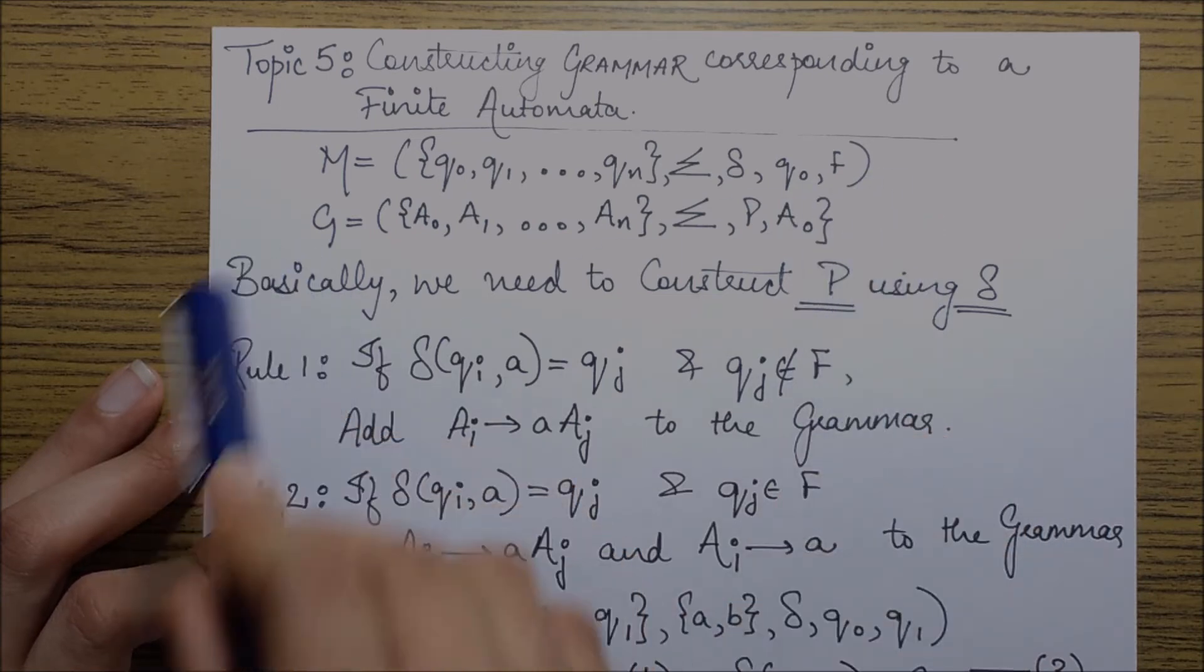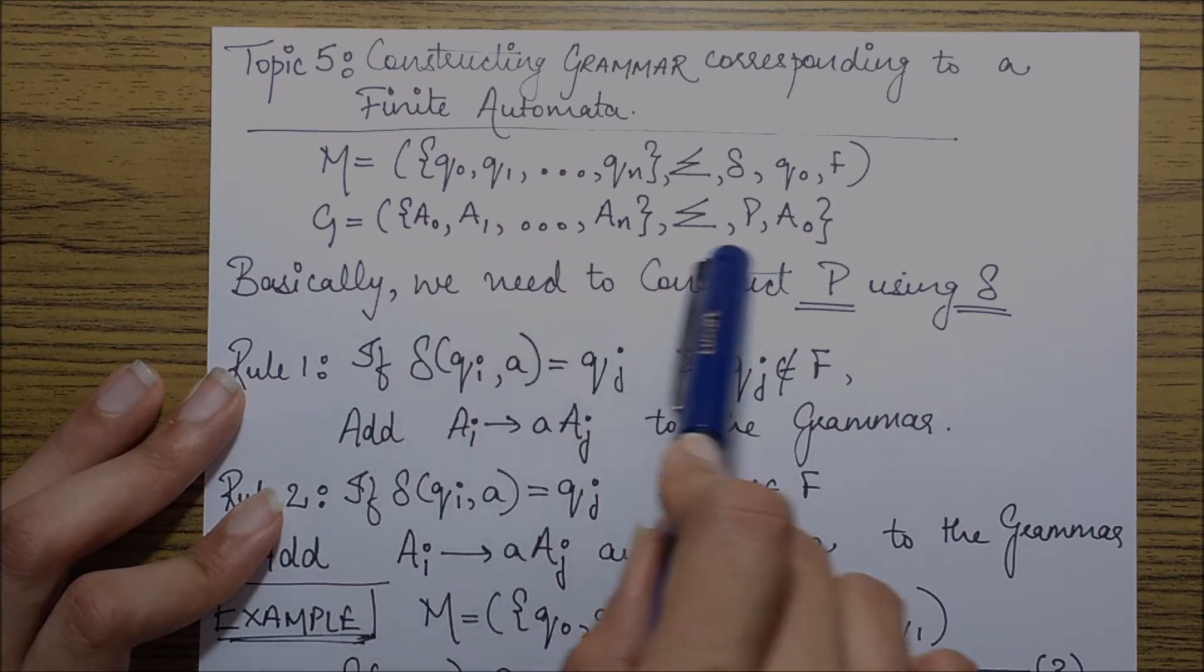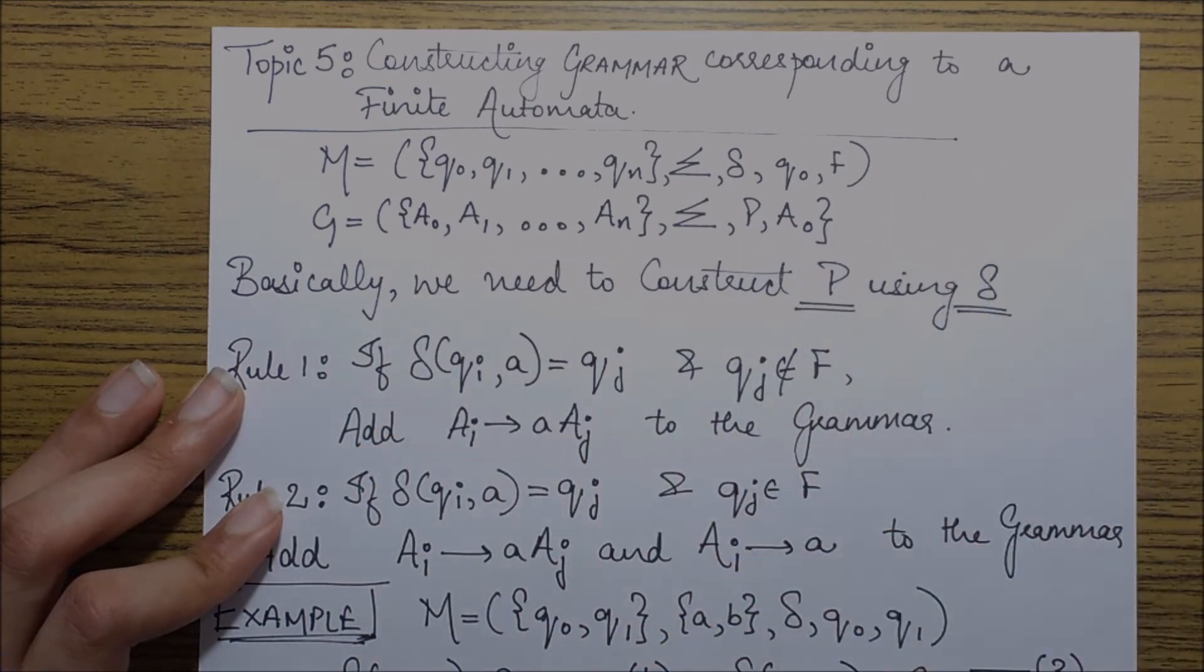Next, if you see the grammar, it is represented as this, which is also a five set, a five-tuple based set.